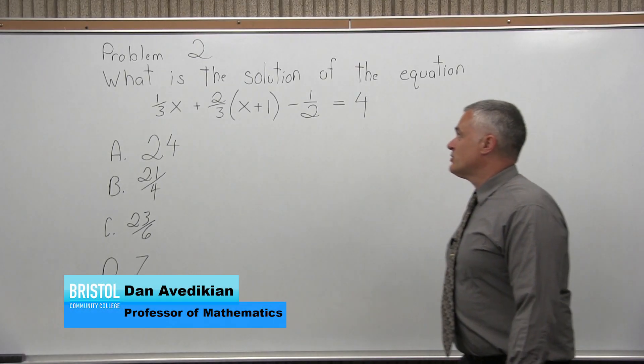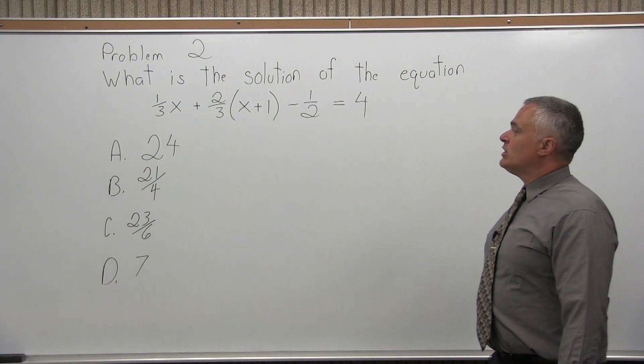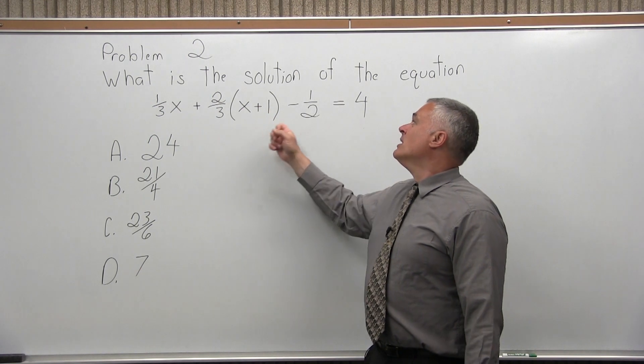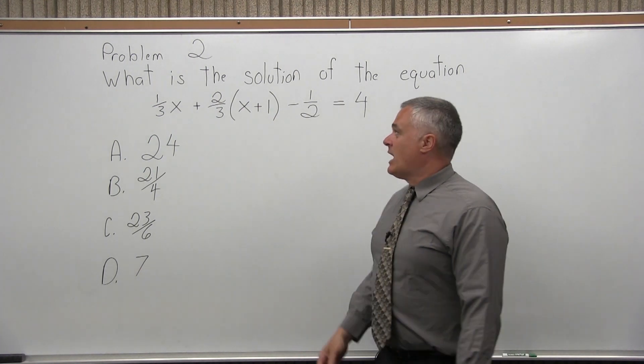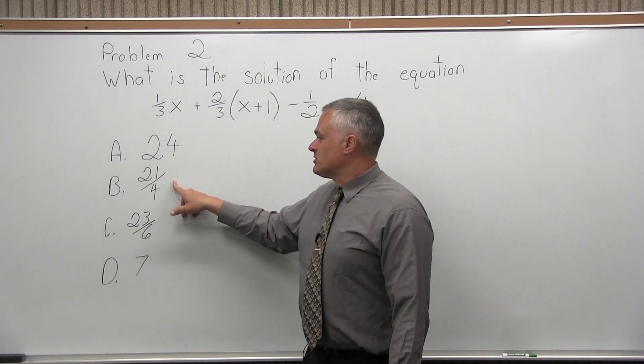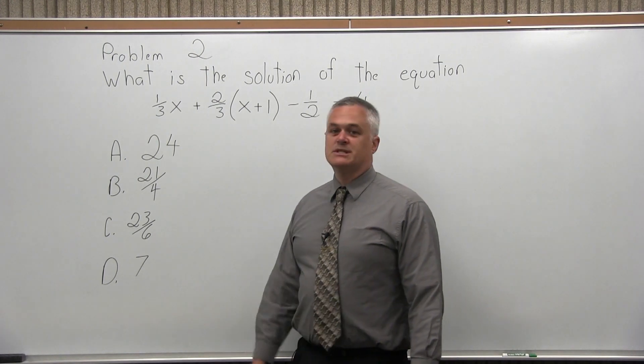This is Problem 2. It says, what is the solution of the equation 1 third x plus 2 thirds times in parentheses x plus 1 minus 1 half equals 4? We have four options. Option A is 24, Option B is 21 over 4, Option C is 23 over 6, and option D is 7.